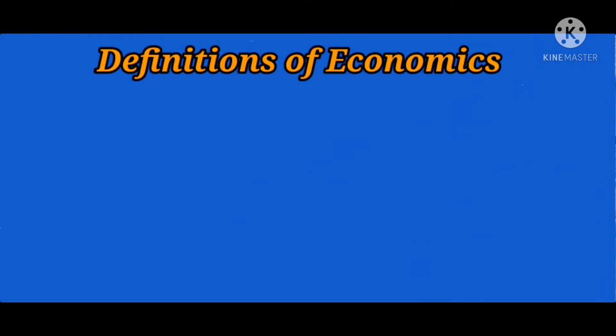Welcome to sci-economics point. In today's lecture we are going to discuss the definitions of economics. Economics is a dynamic subject — it is a scientific, practical and evolving subject. As a social science, it has been defined differently by many economists at different times. Therefore there is no unanimity of opinion among economists, and the definition of economics has been modified from time to time depending upon the scope and inclusion of various human motives.